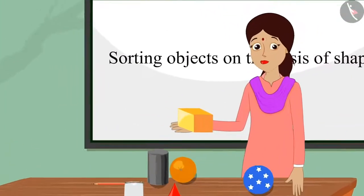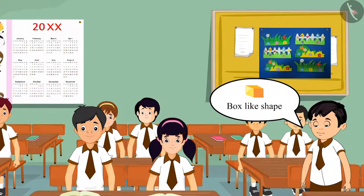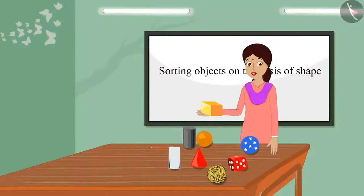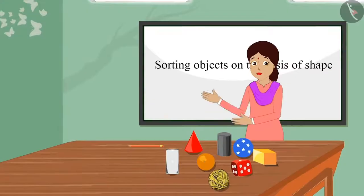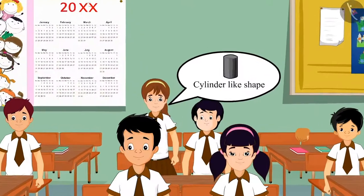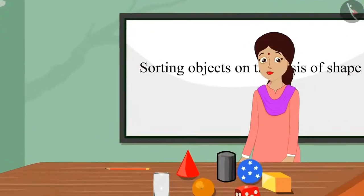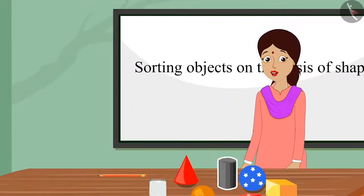The teacher shows another object. A student says: 'Teacher, this has a box-like shape.' The teacher responds: 'Well done, Choto! This has a box-like shape.' For the next object, a student identifies: 'Teacher, it looks like a cylinder.' The teacher confirms: 'Very good, Arty! This has a cylinder-like shape.'